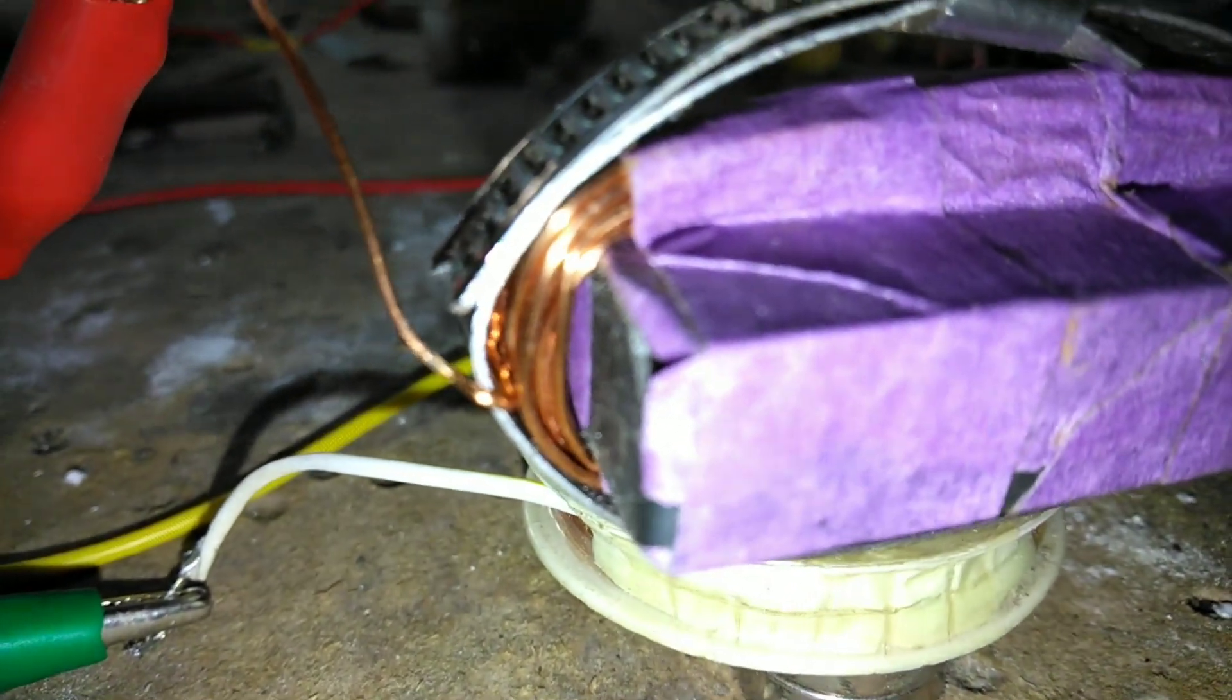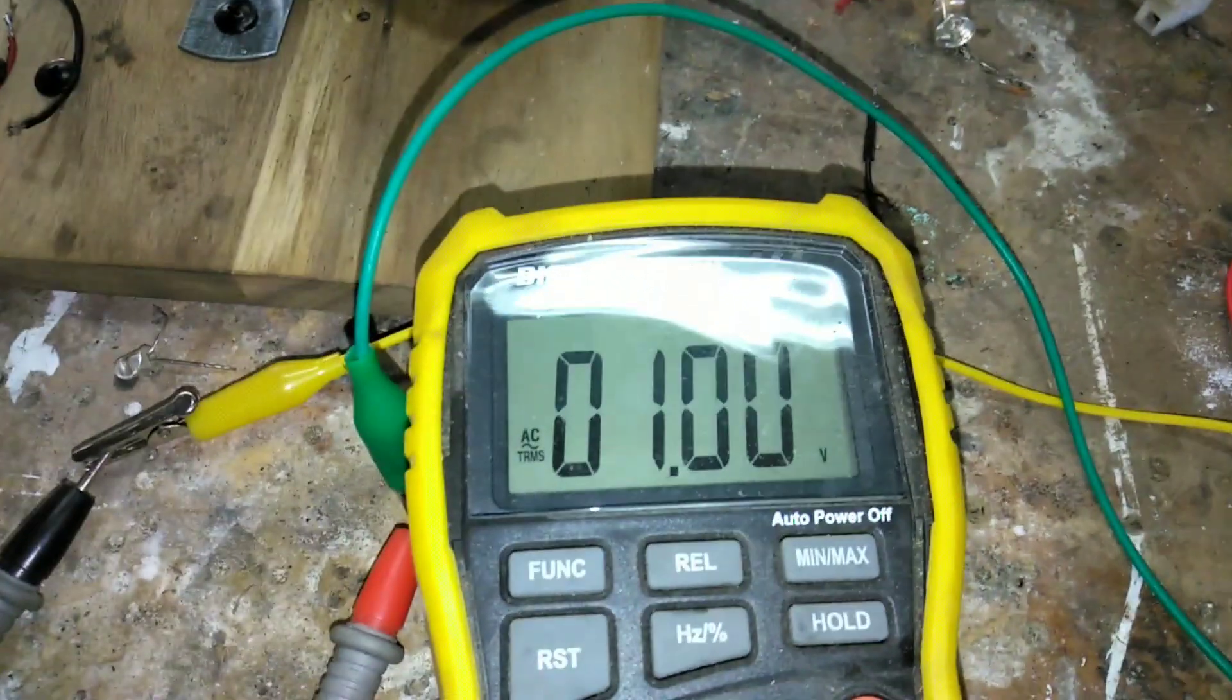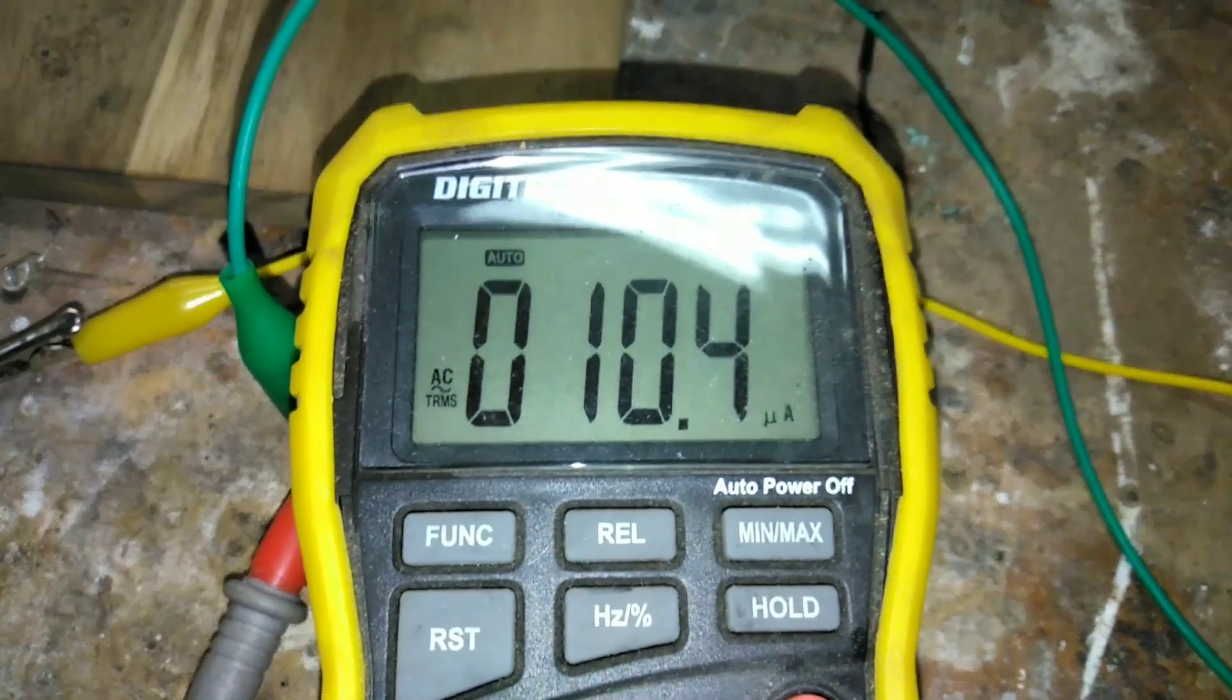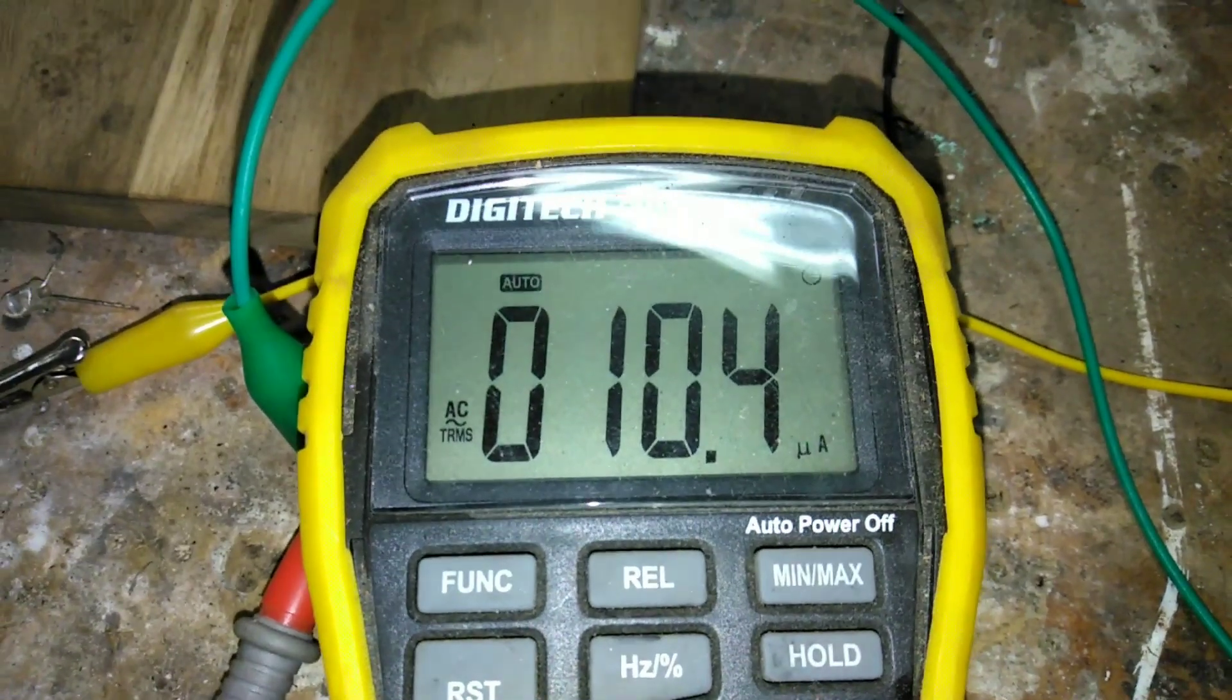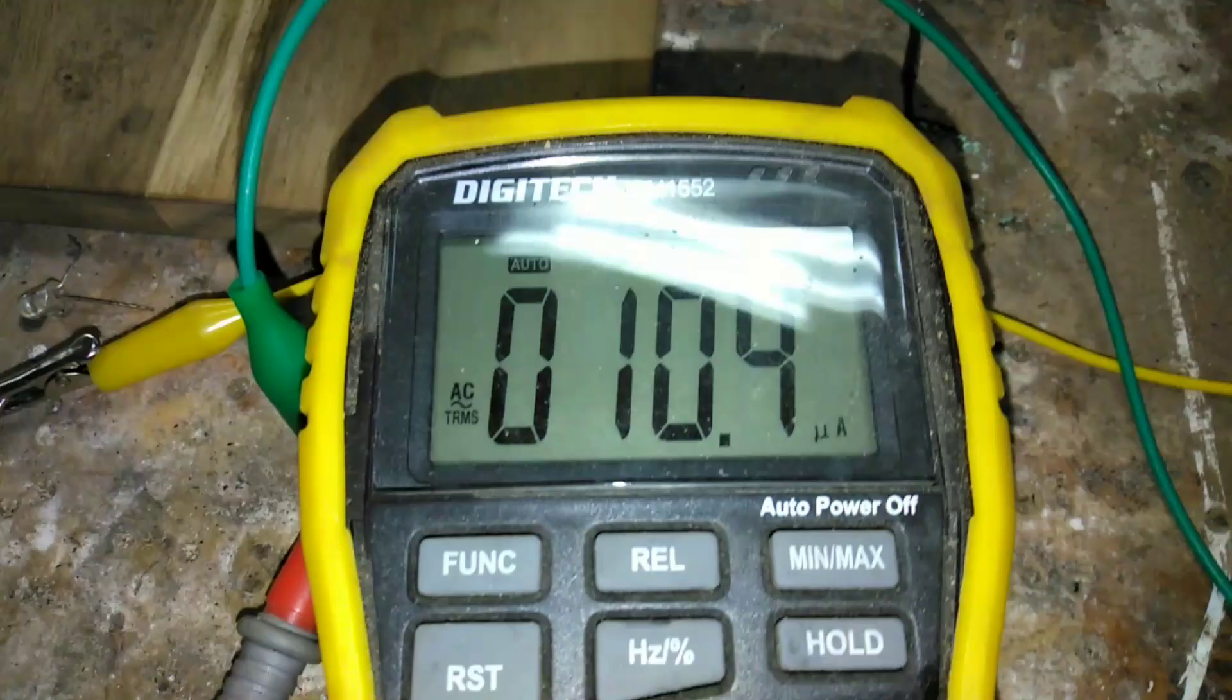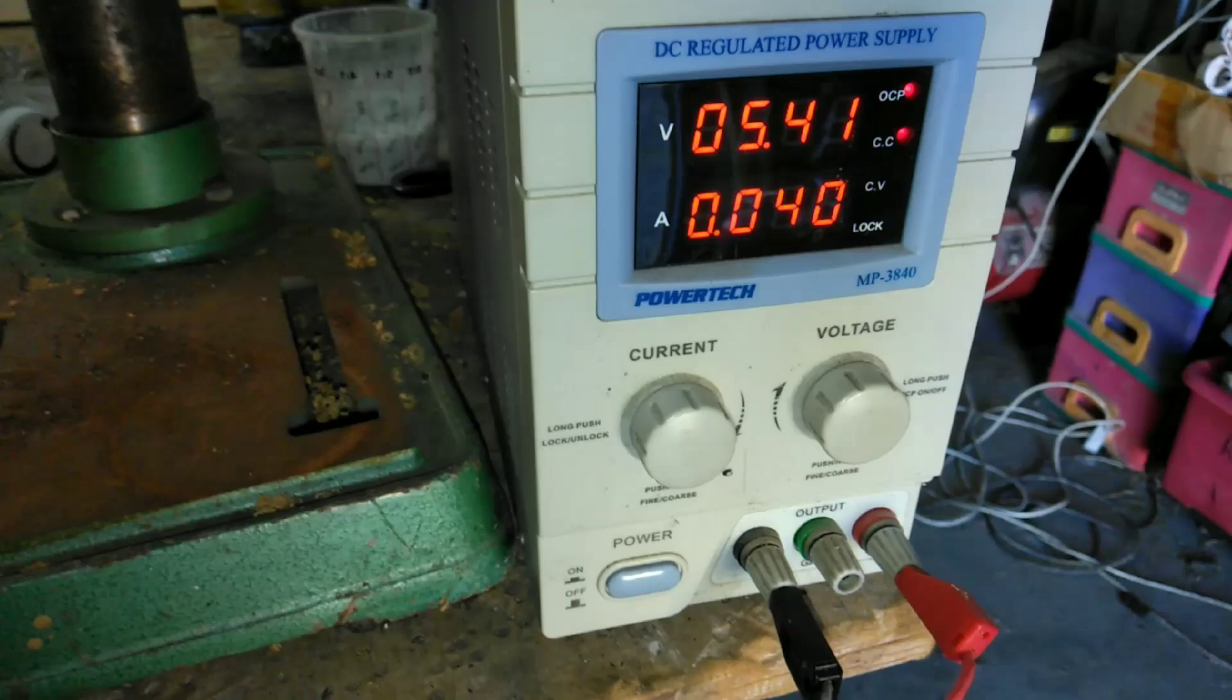So that's that coil. Our volts are now one volt. And we have 10.4 microamps. So really not collecting much at all, really. I guess the only thing I can try is to beef up the current and see what happens here.